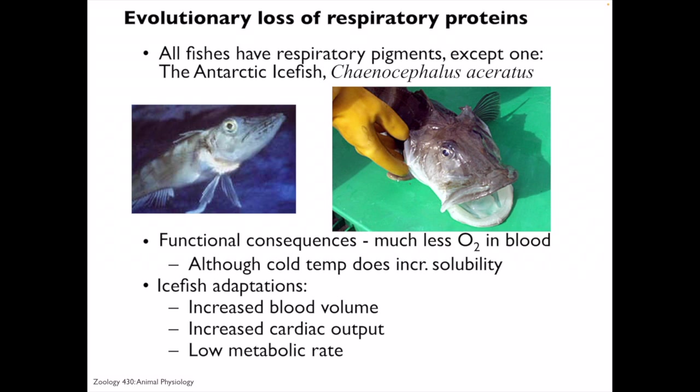A few unusual animals have lost all their hemoglobins. Although all fish have respiratory pigments, there is at least one that doesn't — the Antarctic ice fish. They have much less oxygen in their blood. Although cold water has higher oxygen solubility, it's not enough to compensate, so they have additional adaptations: increased blood volume, increased cardiac output, and a very low metabolic rate. It's really unclear what the benefit of respiratory pigment loss is, but it is possible.